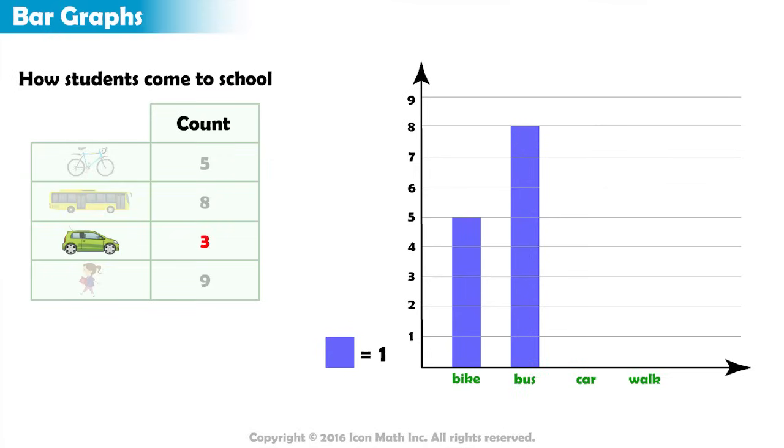And there are three students who come by car. So on top of the car category, we color three squares.